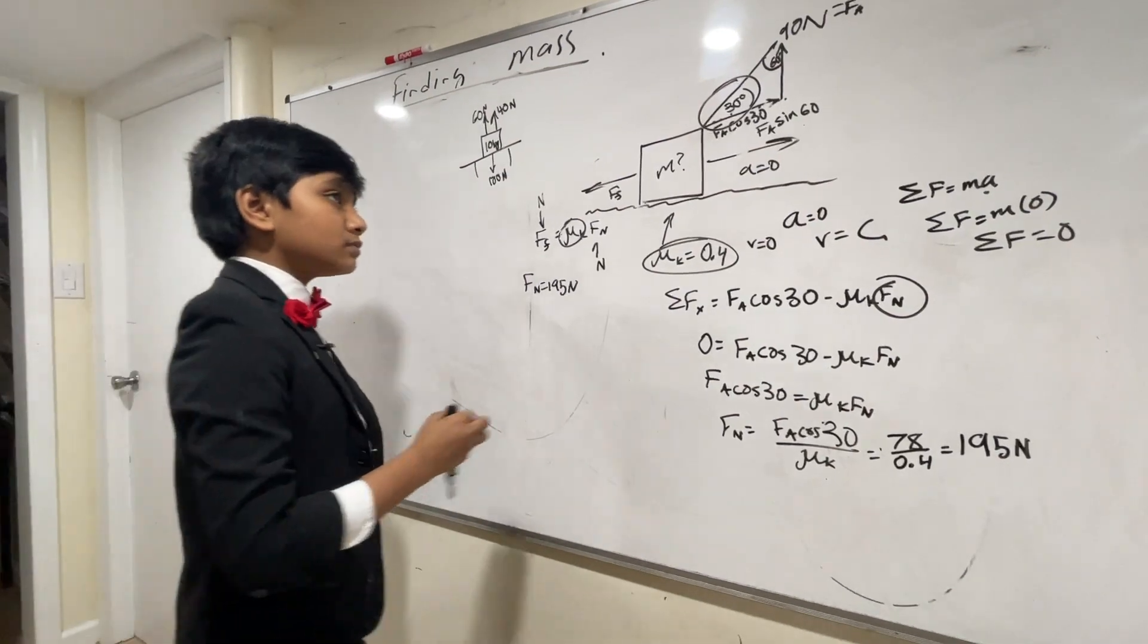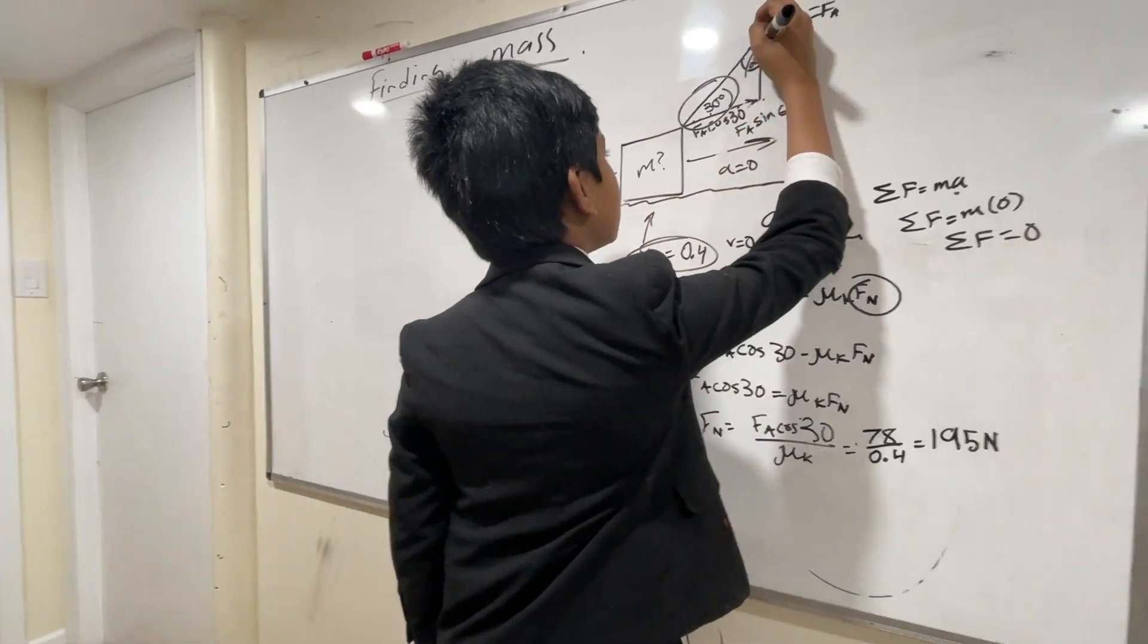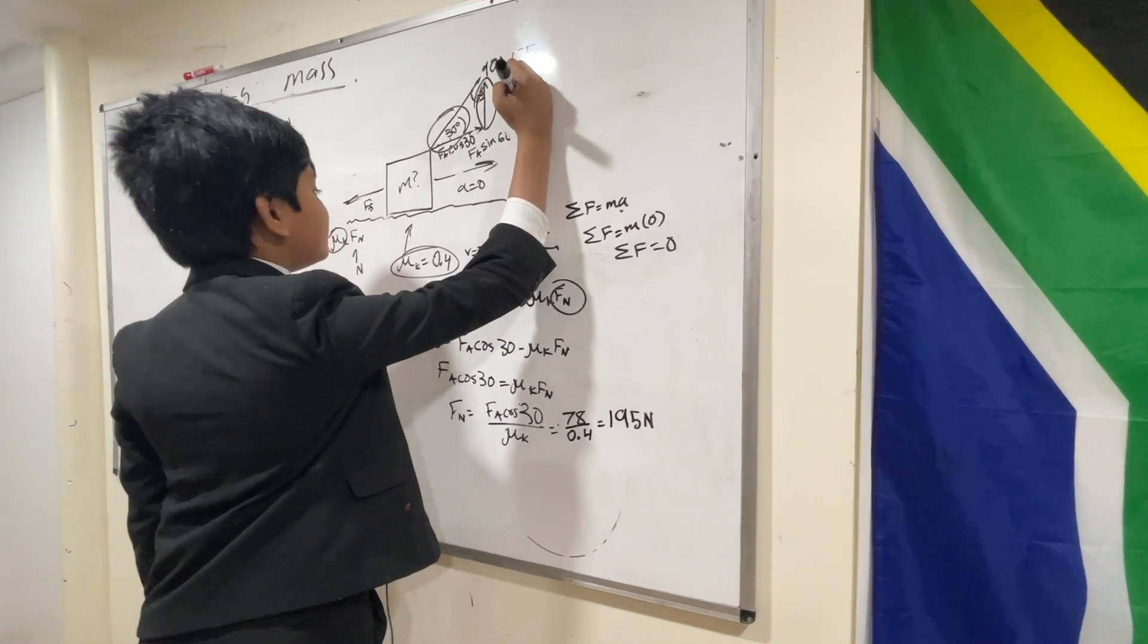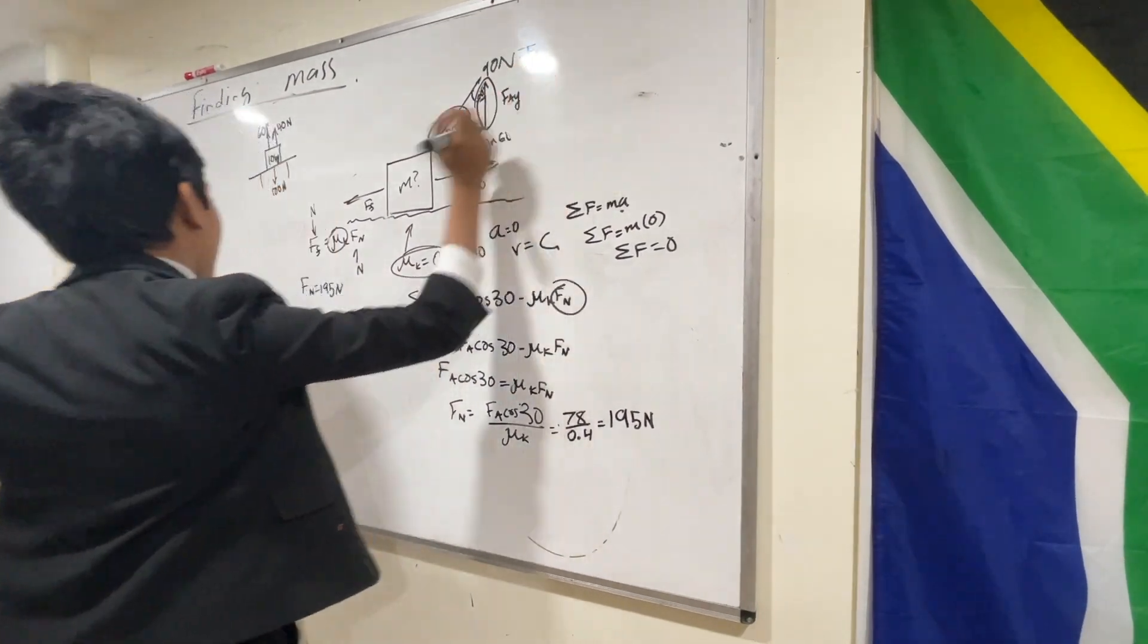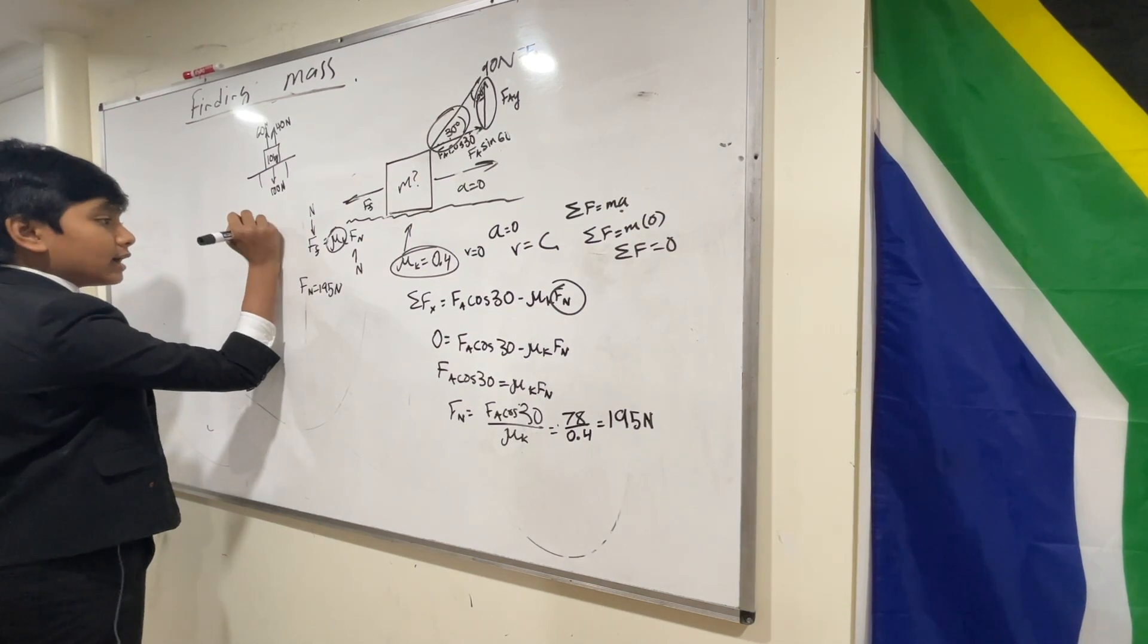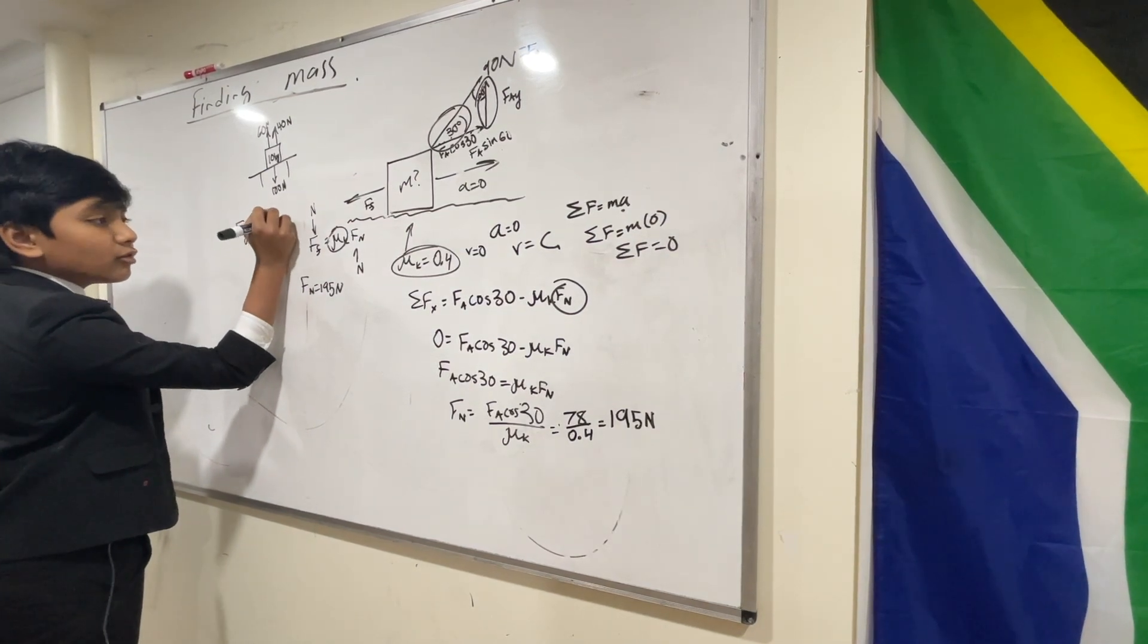Similarly, we would have to subtract this, f applied y, from fg, in order to obtain fn. Or, fg minus fay, f a sine 30, is equal to fn.